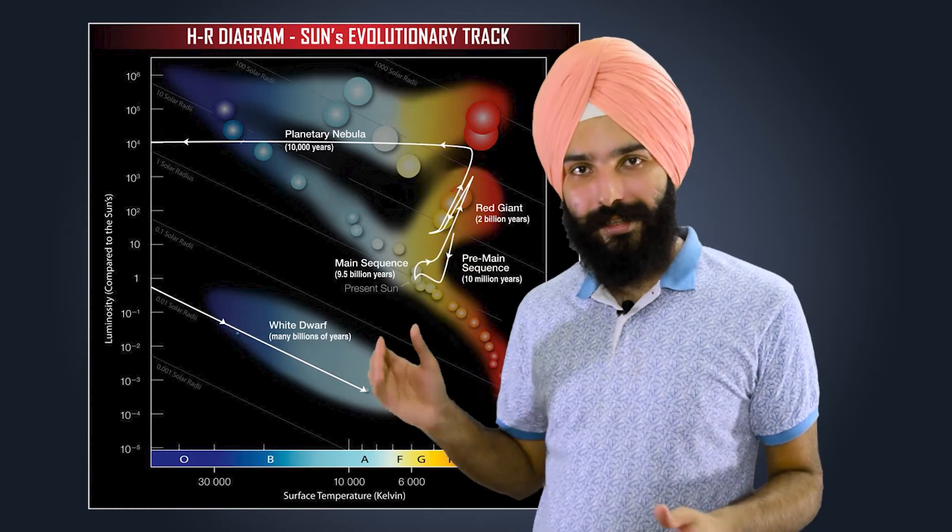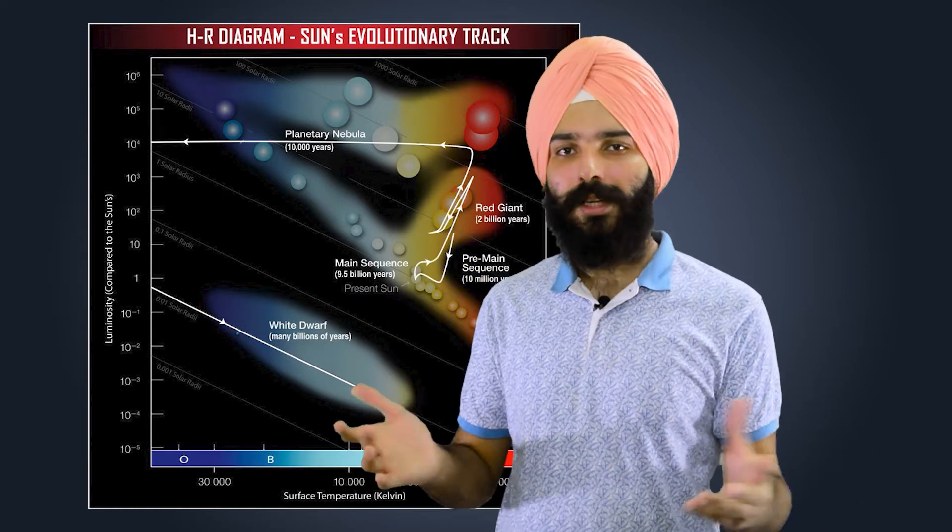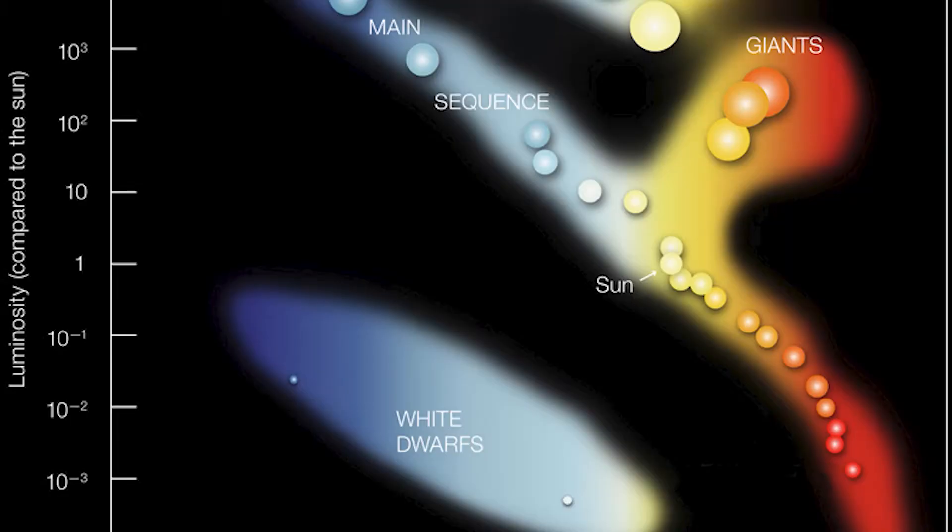You see, here at the top are the red giant stars and the super giants, at the bottom are the red dwarfs and the white dwarfs, and in the middle you see the main sequence stars.